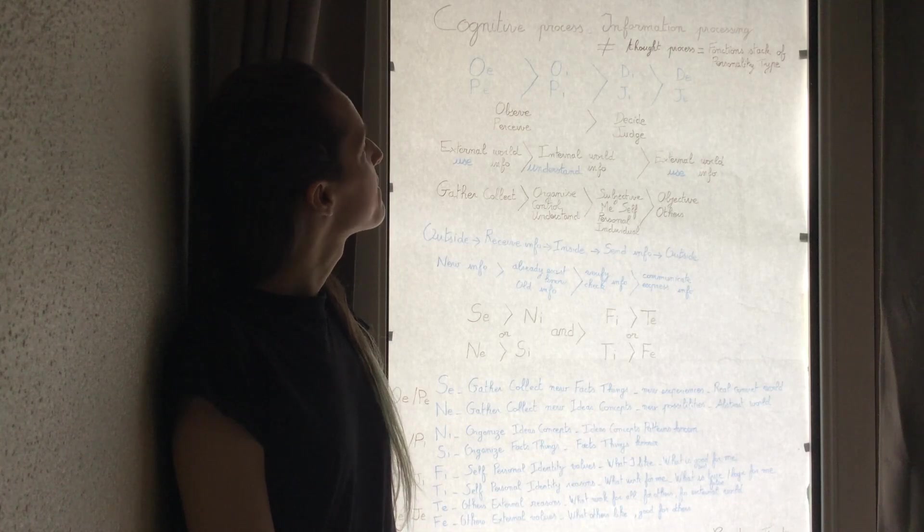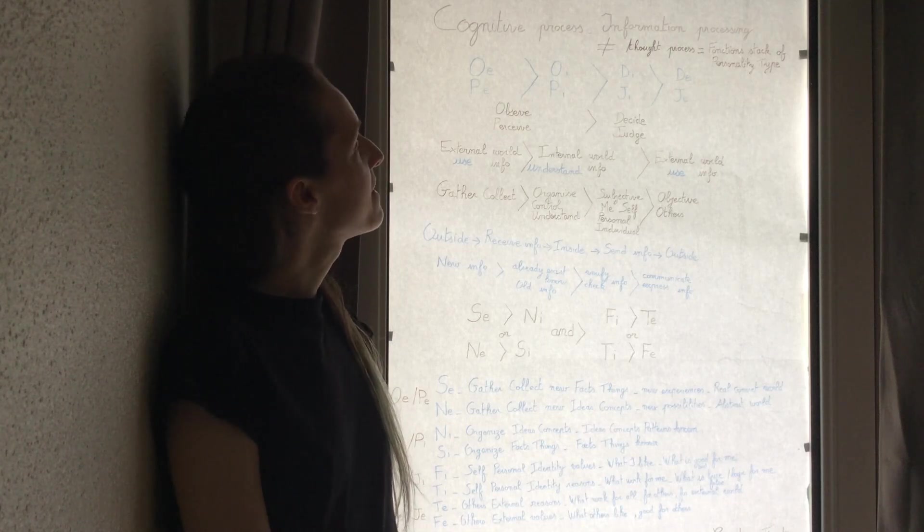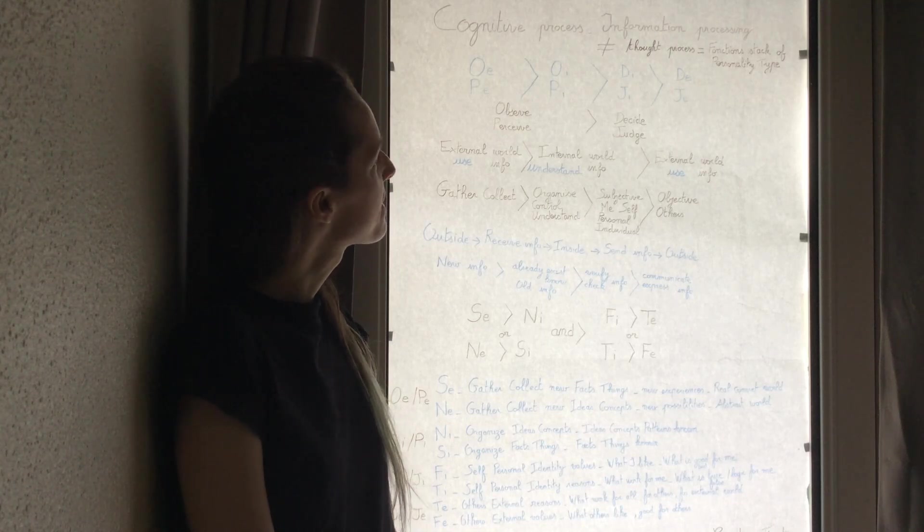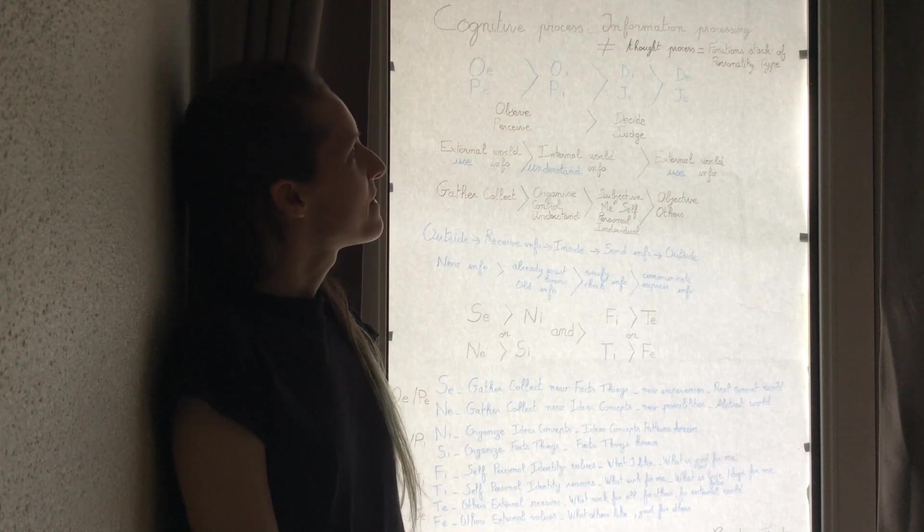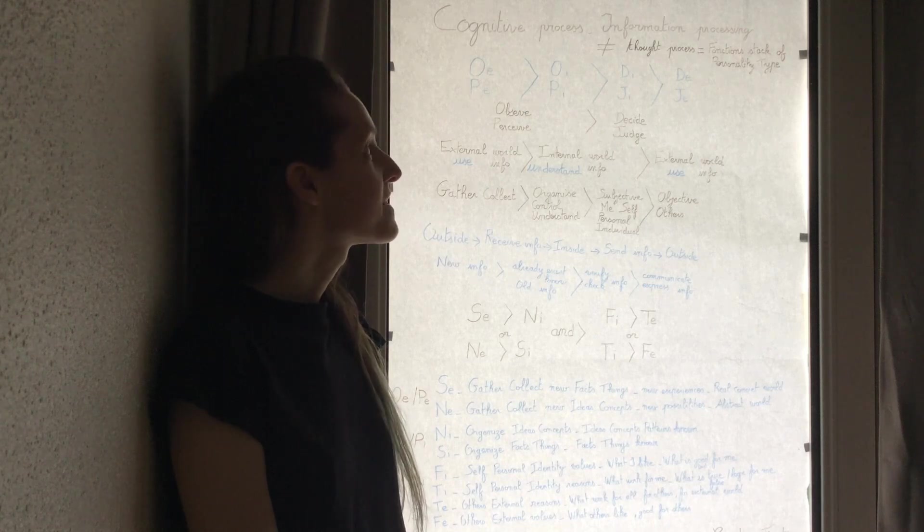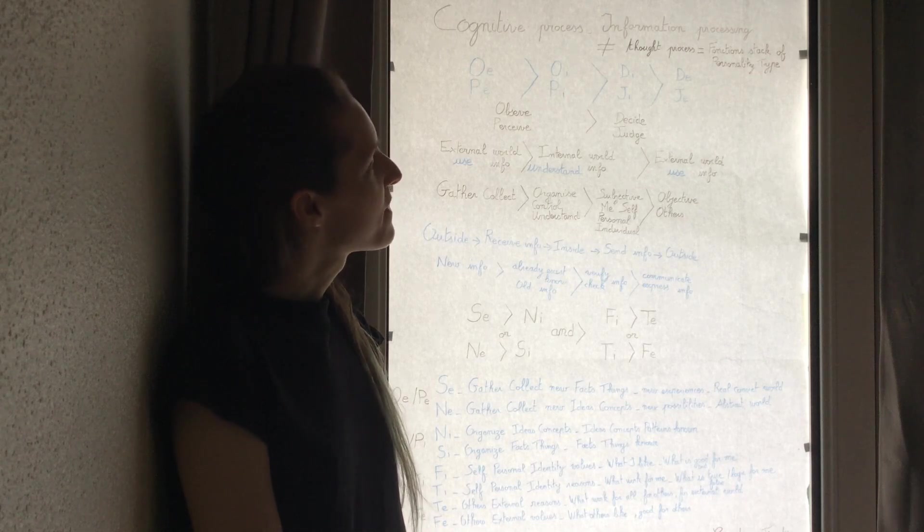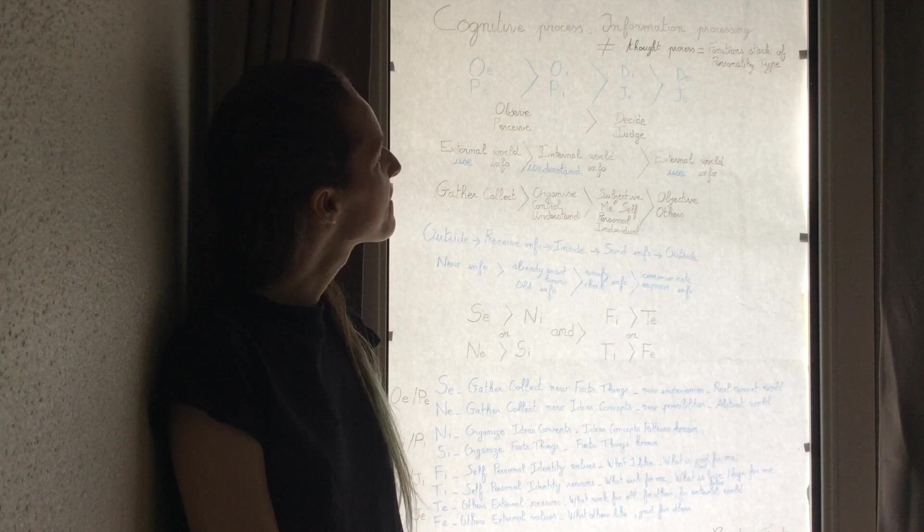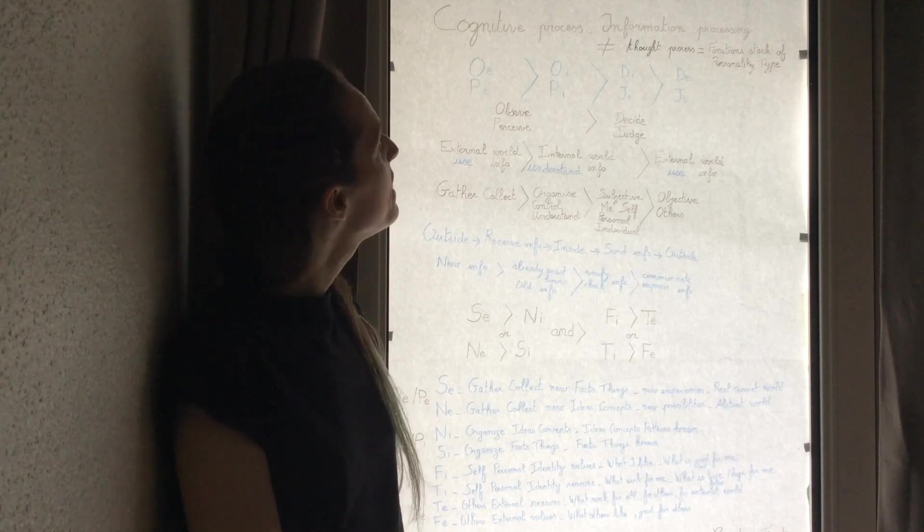We first have an extroverted observing or perceiving function, and an introverted observing or perceiving function, and an introverted deciding or judging function, and to finish, an extroverted deciding or judging function.